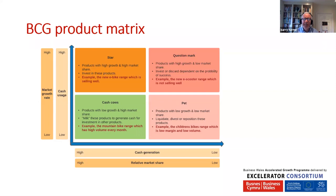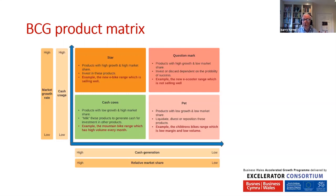Moving up to the Stars — these are products with high growth rate and high market share. You need to invest in these: put marketing behind them, open new outlets, find new customers, and really push that growth rate. These are where your next generation of cash cows come from. The example in the bike shop is the new e-bike range, which is selling well but the market is still really growing — I feel we can probably double or treble sales of the e-bike range over the next 12 to 18 months.